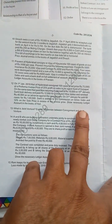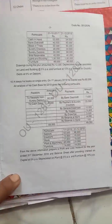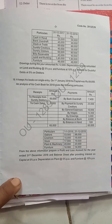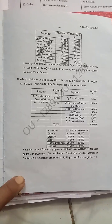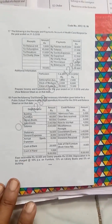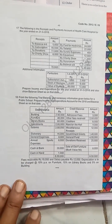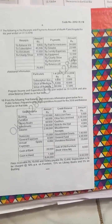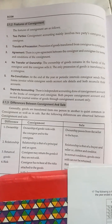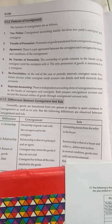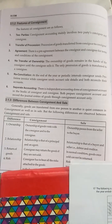In non-profit organizations, we are expecting some problems, but this time there is a lot of theory. Topics include the differences between a receipts and payment account and an income and expenditure account, the differences between a trading concern and a non-trading concern, and the features of consignment. The differences between consignment and sales are very important.